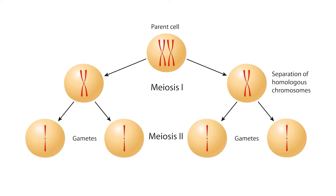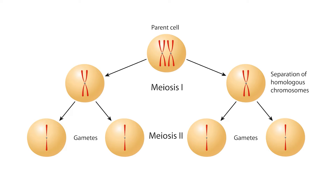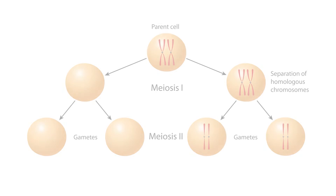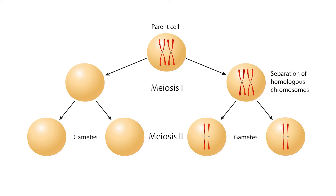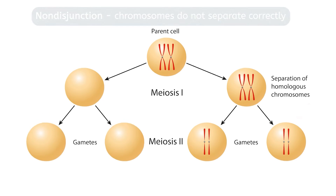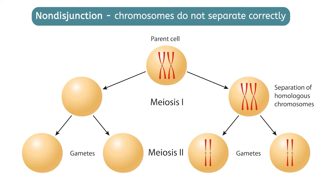Remember what happens during anaphase one of meiosis? The homologous chromosomes separate and end up going to different cells. However, if the chromosomes do not separate and end up going to the same cell, we end up with two gametes that have two copies of the chromosome, and two gametes that have none. This is called a non-disjunction, and is one of the most common types of chromosomal mutations.